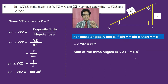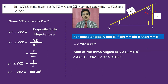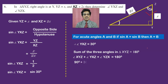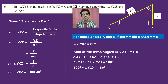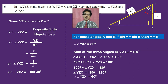Now we have angle XYZ = 90 degrees and angle YXZ = 30 degrees. Using the sum of angles in a triangle: XYZ + YXZ + YZX = 180 degrees, so 90 + 30 + angle YZX = 180. Therefore angle YZX = 180 − 120 = 60 degrees.